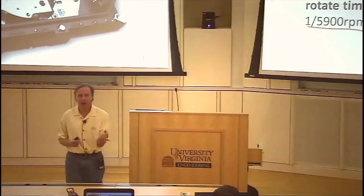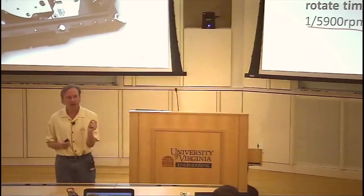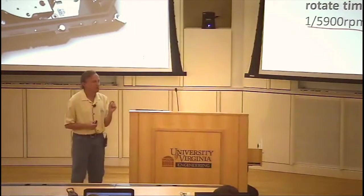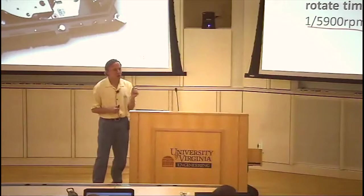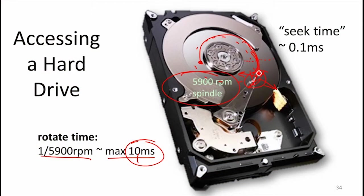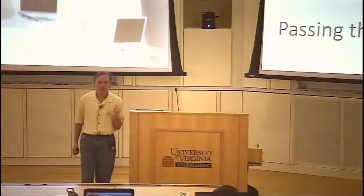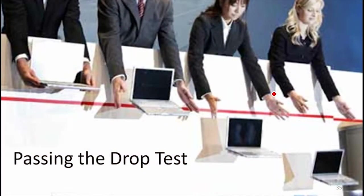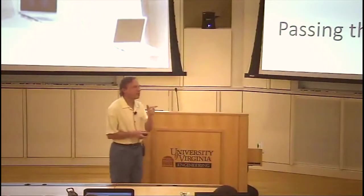The read head is a physical thing touching the magnetic surface to read values. So if your drive falls on the floor or gets shaken up while the head is near the surface, it's going to make a big scratch and eliminate some of your data. How do you solve that — how do you avoid losing data when you drop your computer?